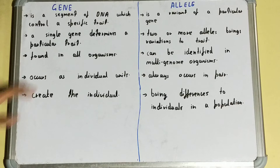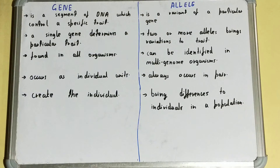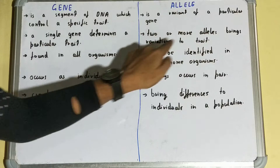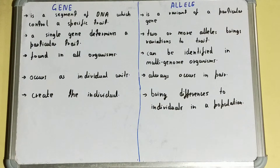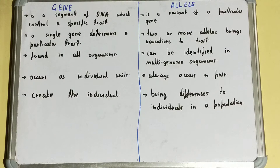A single gene determines a particular trait or a particular characteristic or a particular quality. But if we talk about the allele, two or more alleles bring variation to a trait. So when there are two or more different variations of a particular gene, they bring variations in characteristics. The characteristics remain the same but there will be slight changes.